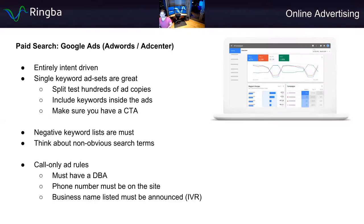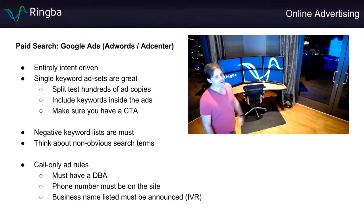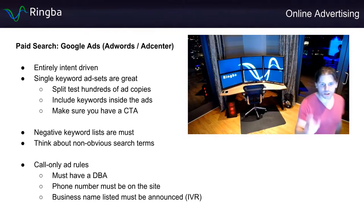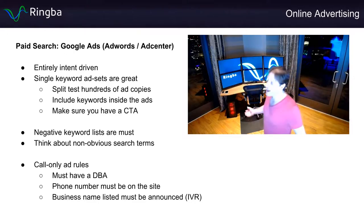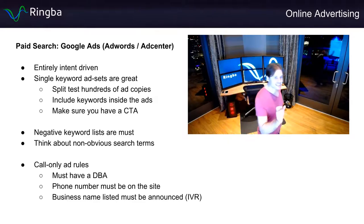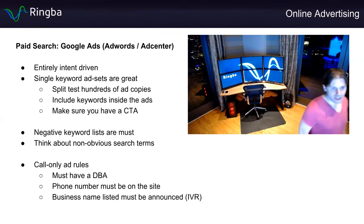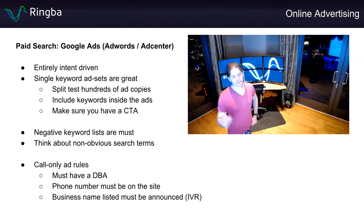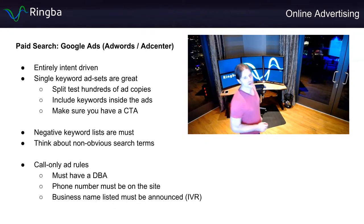If you're starting with Google Ads, since it's entirely intent-driven, I recommend using single keyword ad sets or a couple of keywords. If you're targeting 'plumber,' use 'plumber near me' or 'plumbers around me,' and target the ad to that specific keyword — or 'Las Vegas plumber' or 'Los Angeles plumber.' Put the keyword that was searched inside the advertisement — this makes it super relevant to the person searching and allows you to optimize your advertisements by specific keywords.